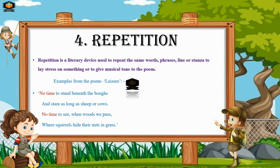The next literary device is repetition. Repetition is a literary device used to repeat the same words, phrases, lines, or stanzas to lay stress on something or to give a musical tone to the poem. For example, from the poem 'Leisure': 'no time to stand beneath the boughs and stare as long as sheep or cows, no time to see when woods we pass where squirrels hide their nuts in the grass' — the phrase 'no time' is repeated many times throughout the poem.